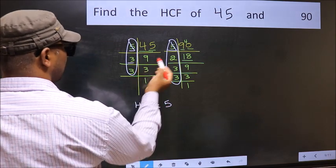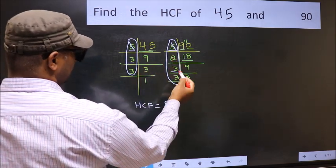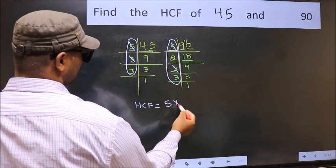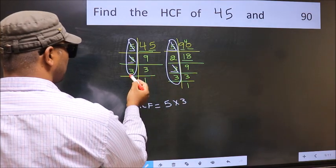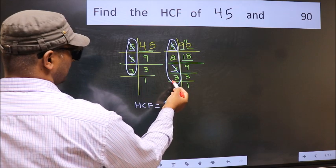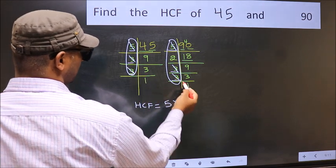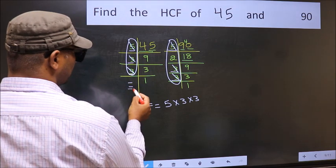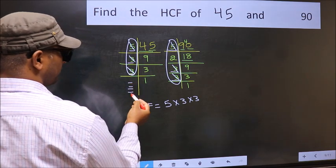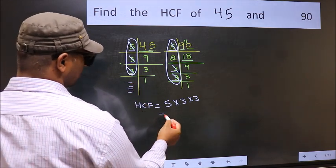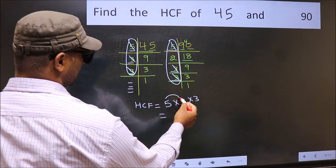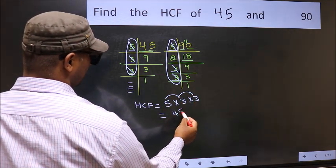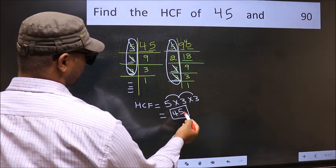Next, do we have 3 in both? Yes — mark it. Next 3 again: do we have another 3 in both? Yes — mark it. No more numbers are left. So our HCF is 5 times 3 times 3, which is 5 times 9, giving us 45 as our HCF.